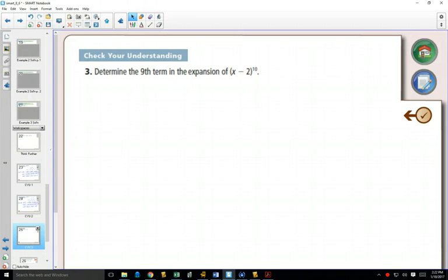So whereas the first two examples looked at expanding things completely and we use Pascal's triangle, this third example says to find a specific term.